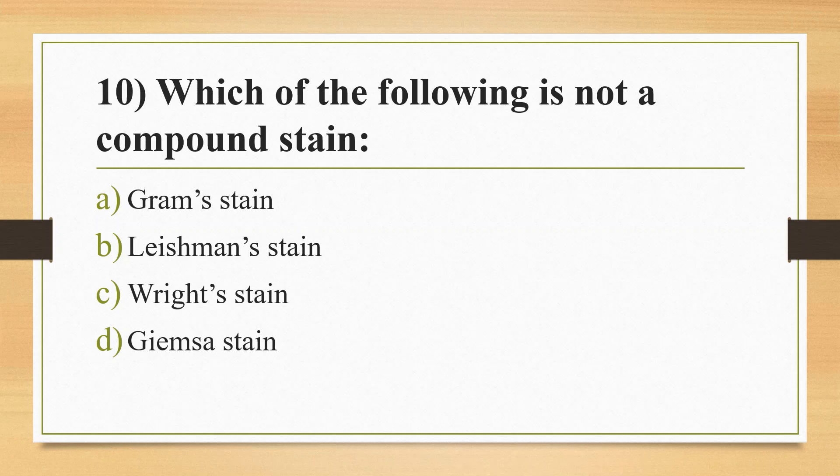Question 10: Which of the following is not a compound stain? Option A: Gram stain. Option B: Leishman stain. Option C: Wright stain. Option D: Jamesa stain. Answer is Option A, Gram stain. Leishman stain, Wright stain, and Jamesa stain are all Romanowski stains. Gram stain is a differential stain.